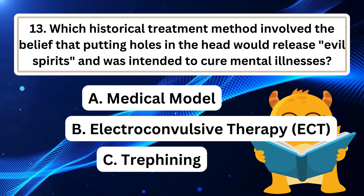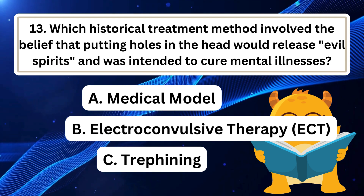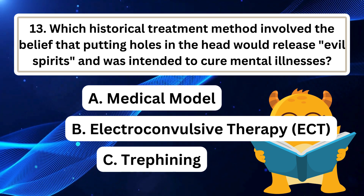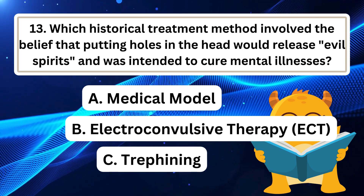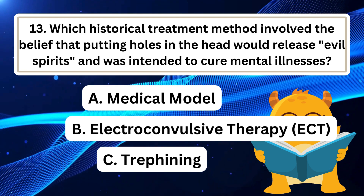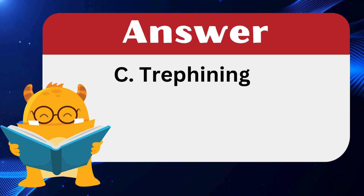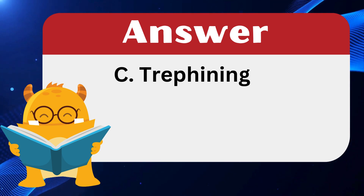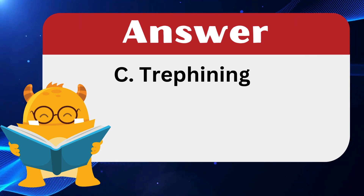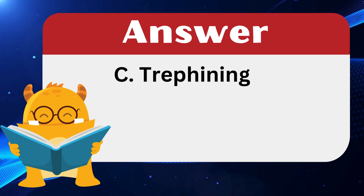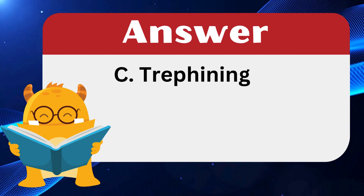Question 13: Which historical treatment method involved the belief that putting holes in the head would release evil spirits and was intended to cure mental illnesses? The answer is C: Trephening. Trephening was an ancient practice involving the drilling of holes into the skull, believed to release evil spirits and cure mental illnesses. The medical model refers to treating mental illness as curable similar to physical illnesses, while electroconvulsive therapy (ECT) involves electric currents through the brain to treat severe depression.